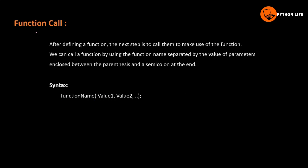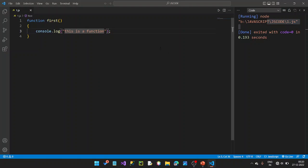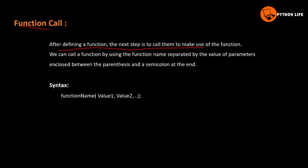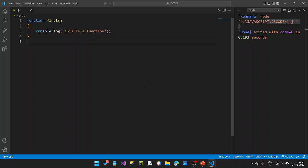After defining a function, the next step is to call it to make use of the function. To call a function, we use the function name followed by the values of parameters included between the parentheses and a semicolon at the end. The values passed to parameters are optional.